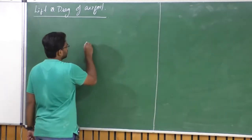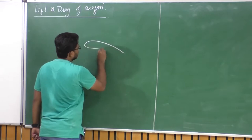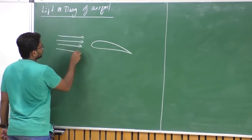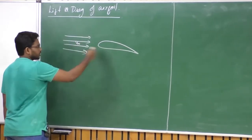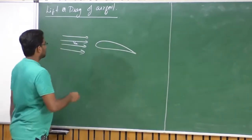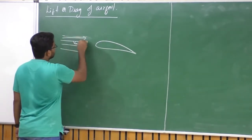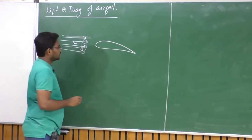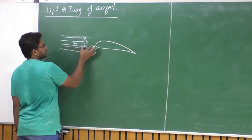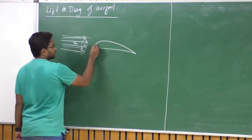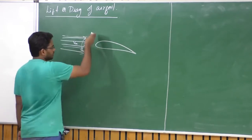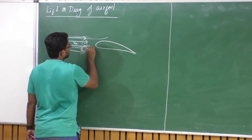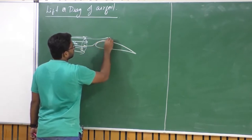Let us place this airfoil in the flow — that is, the airflow with a free stream velocity of V infinity, which means the airfoil is also moving at velocity V infinity. Let us assume that this flow happens in a stream tube. As soon as this stream tube encounters the leading edge of this airfoil, the parent stream tube will get split into two daughter stream tubes.